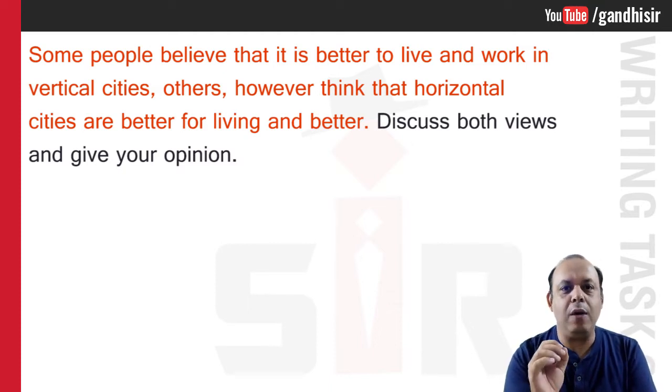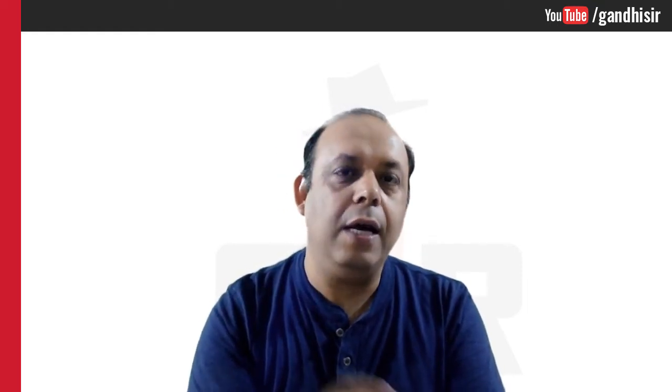First, I will make you understand what a vertical city is. Vertical cities are those cities with lofty or high buildings — that is called vertical buildings. Next, what are horizontal cities? Horizontal cities are semi-urban areas where the house is in a horizontal shape — meaning bungalow types. That is called horizontal cities. Now, how do we approach such questions?